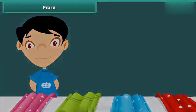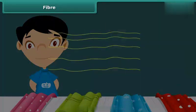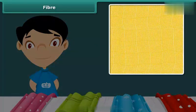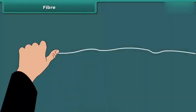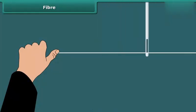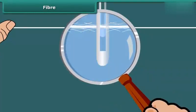Have you ever had a closer look at a fabric? If yes, you must have seen many yarns in it. These thin yarns are made up of still thinner strands called fibers. To understand this, take a piece of fabric and take out a yarn from it. Now press one end of the yarn with your thumb and scrub the other end along its length with a needle. You can see that the yarn splits into thin strands — these thin strands are fibers.